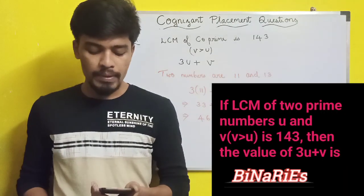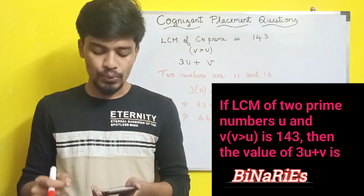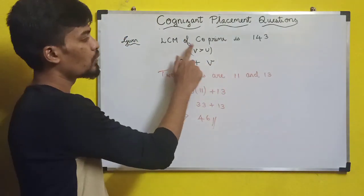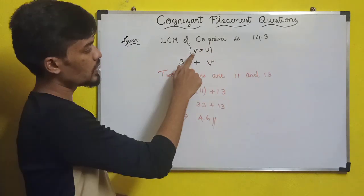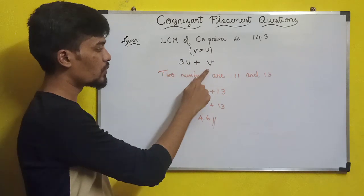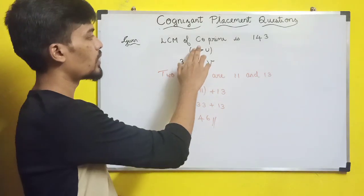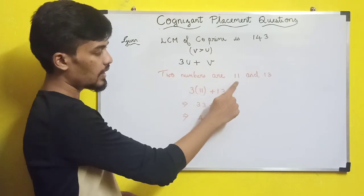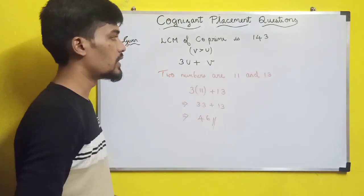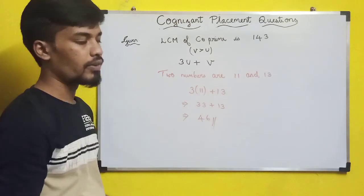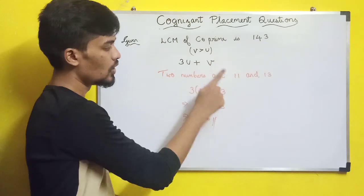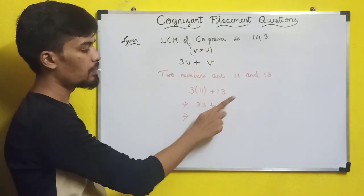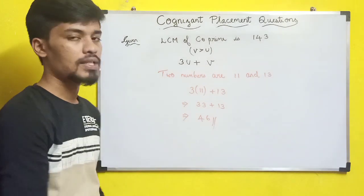Next question: the LCM of two prime numbers u and v (v > u) is 143. Find 3u + v. Since 143 = 11 × 13, the two primes are 11 and 13. Since v > u, v = 13 and u = 11. Therefore 3u + v = 3(11) + 13 = 33 + 13 = 46.